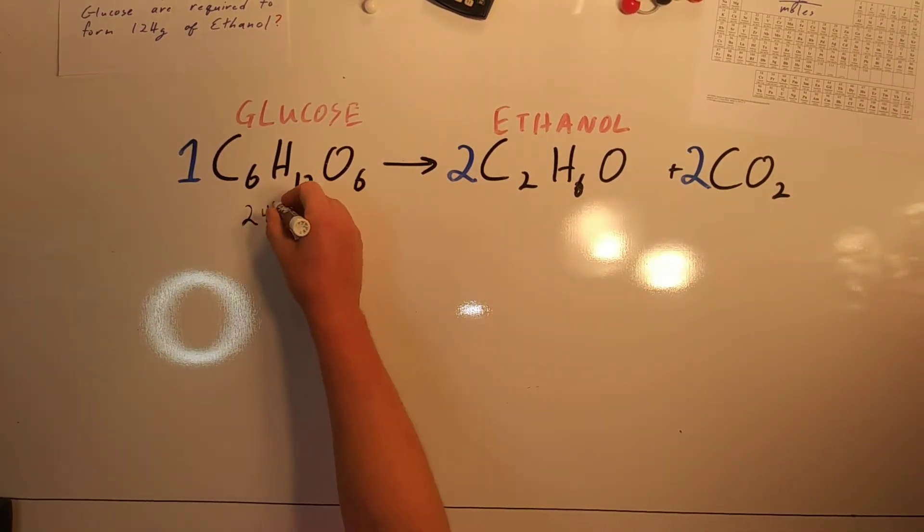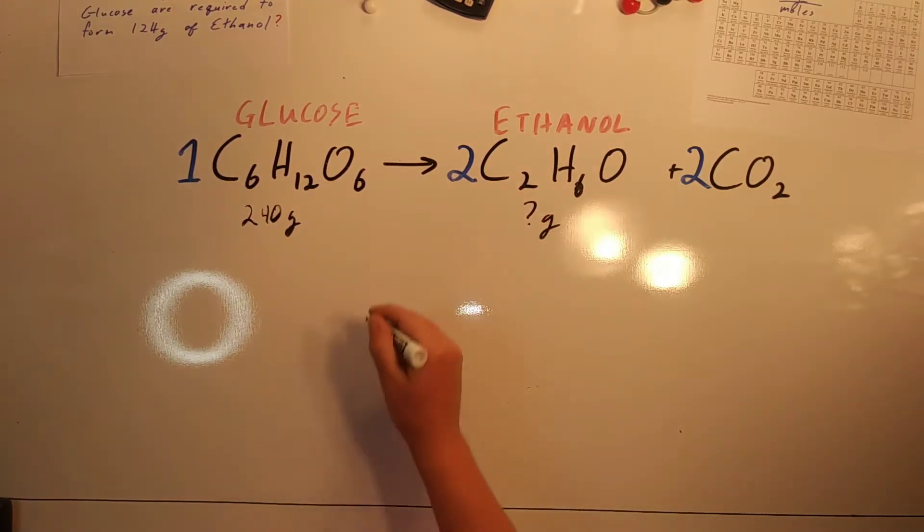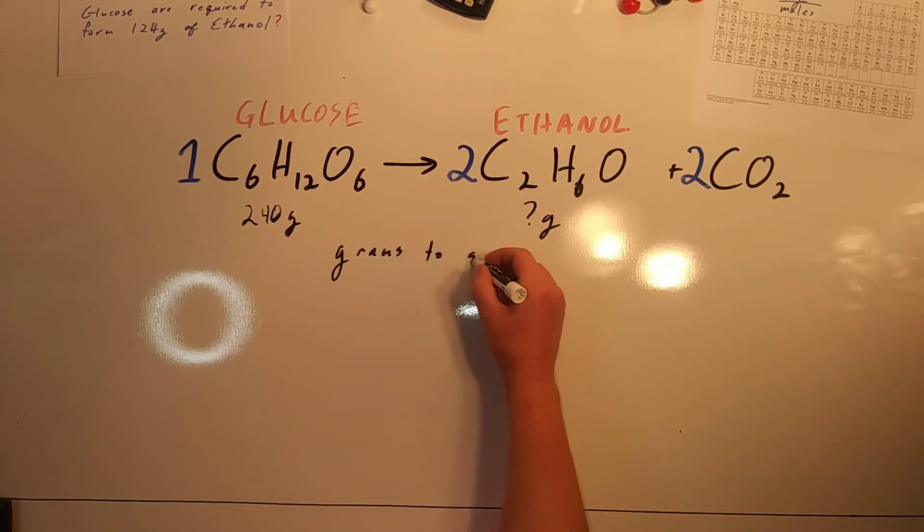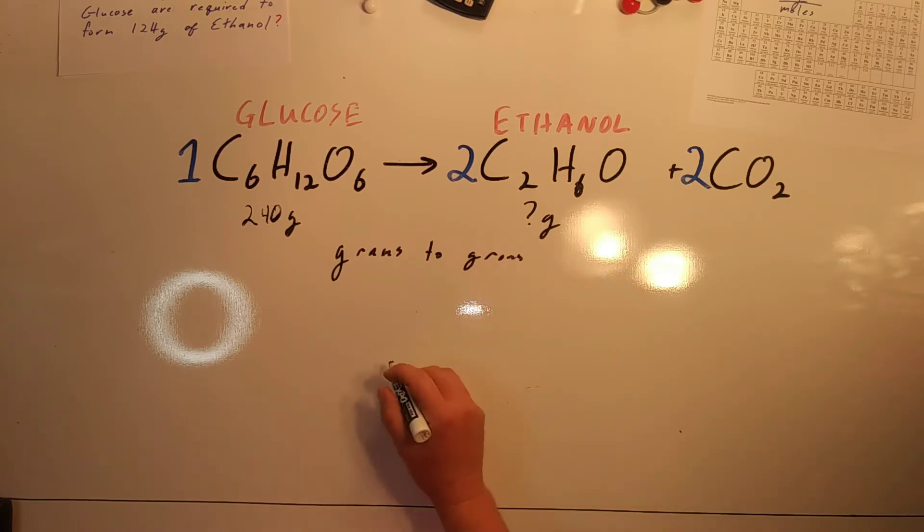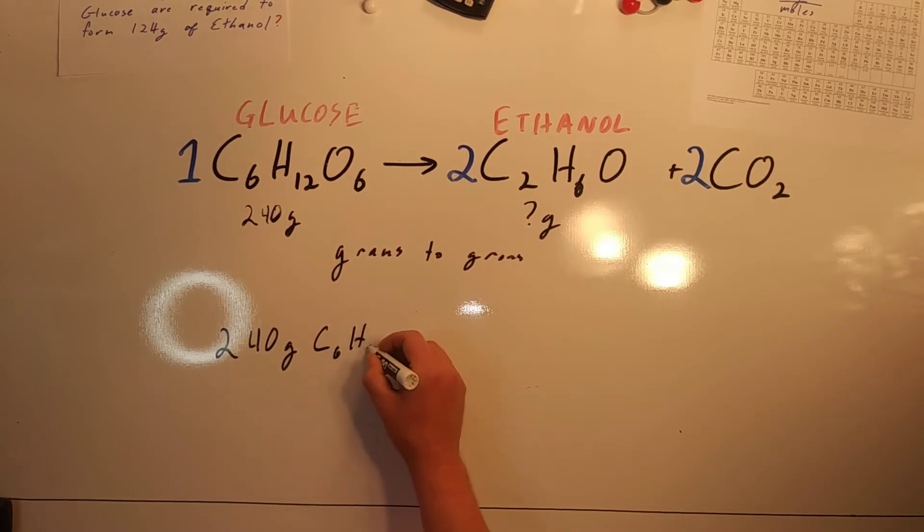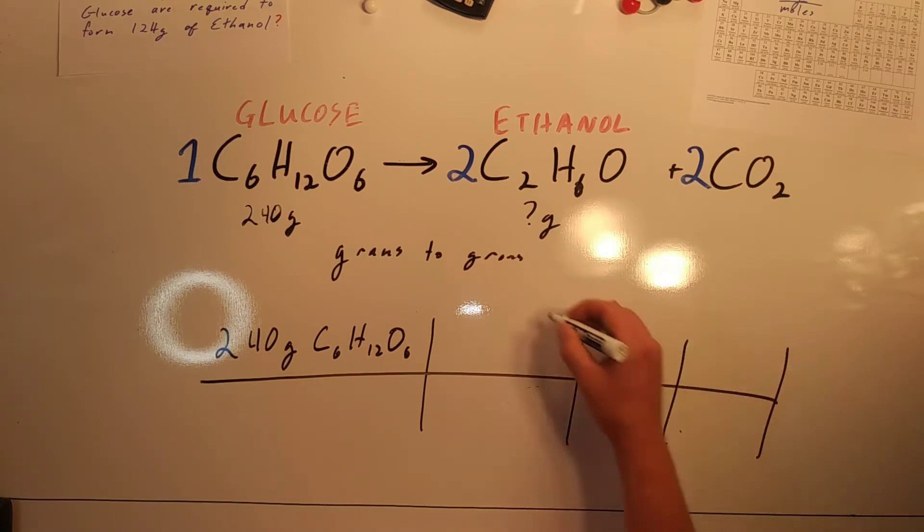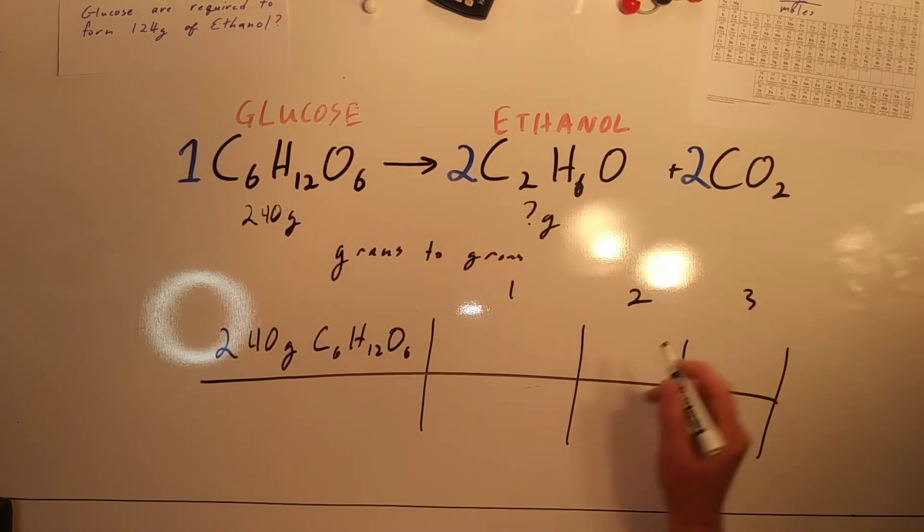With 240 grams of glucose, the question is how many grams of ethanol can be produced. This is a grams-to-grams type problem, where we start with 240 grams of what we're starting with, the glucose, and then solving it in three steps.